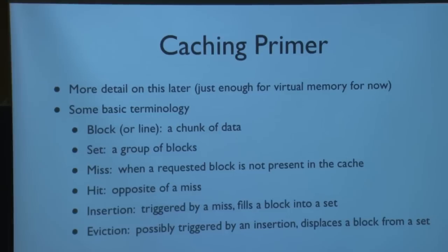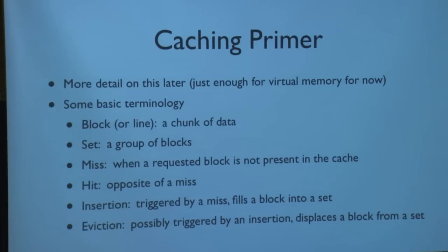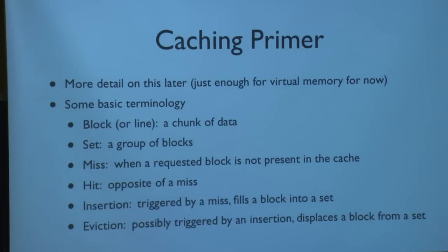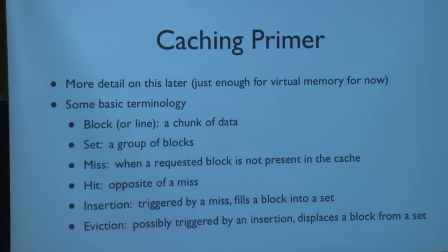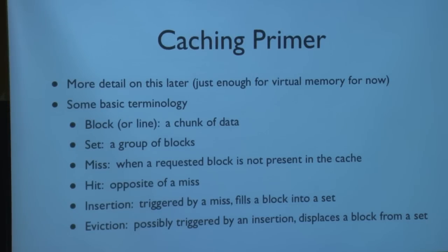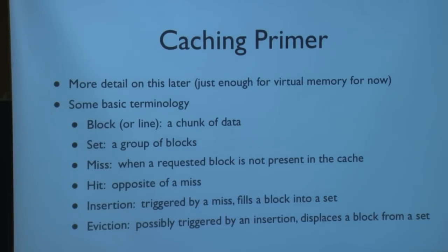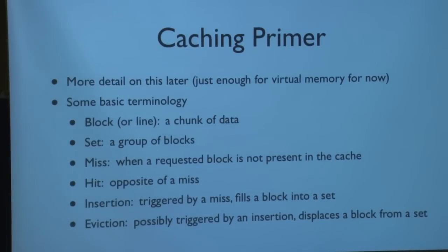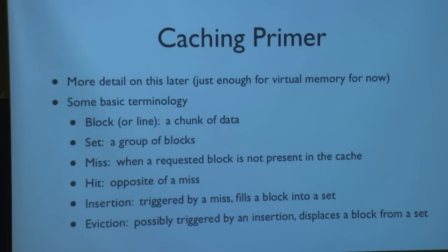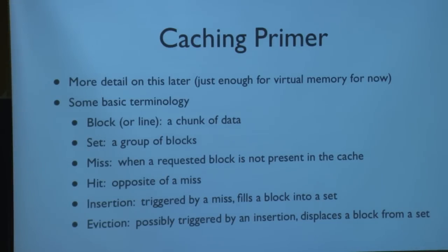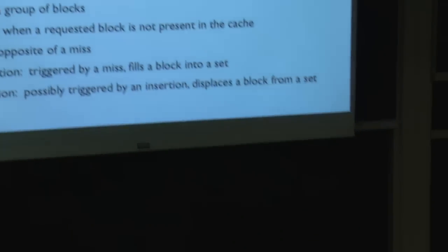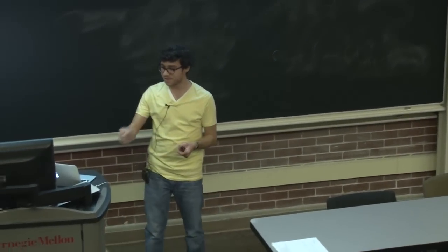Just a high-level overview of caches — enough to get by for virtual memory. In caches, the unit of data being moved around is called a block or a line — just a chunk of data, maybe 64 bytes or four kilobytes. A set in a cache is a logical group of blocks — these types of addresses map to this group, those types map to another. A miss is when you look for data and it's not there; a hit is when it is. An insertion is when you miss, go grab the data, and put it into the cache.